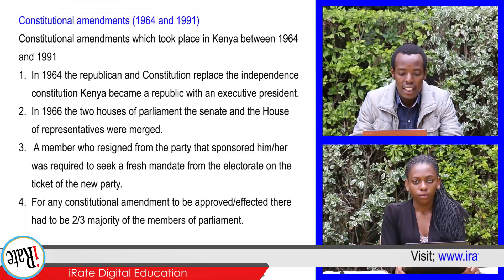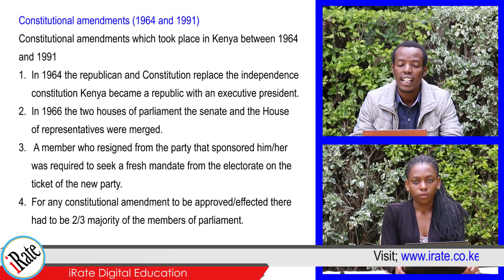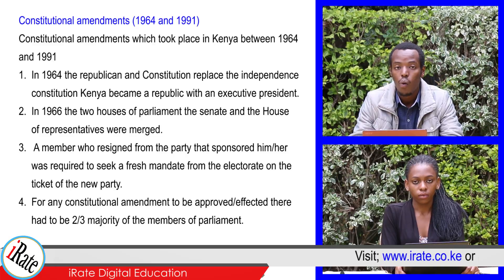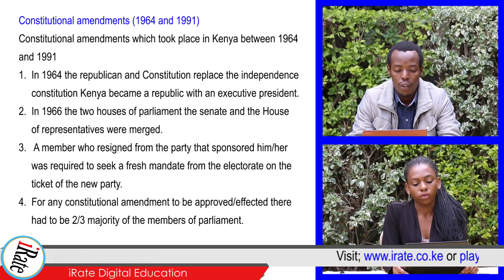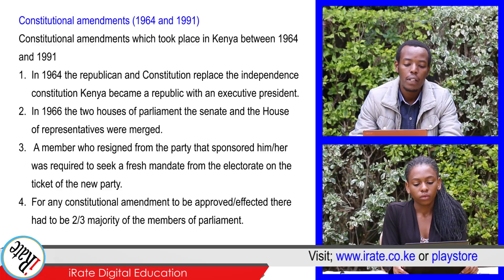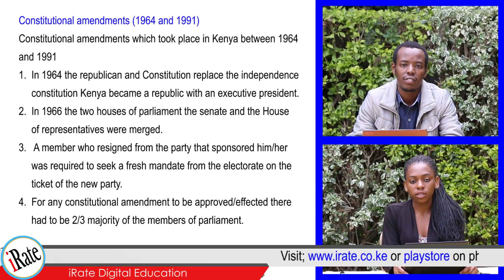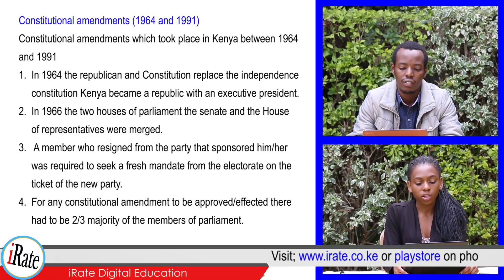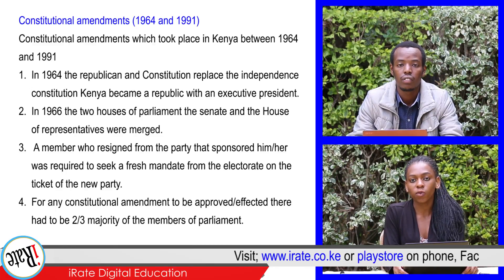Constitutional amendments which took place in Kenya between 1964 and 1991 are as follows. 1. In 1964, the Republic of Kenya became a republic with an executive president. 2. In 1966, the two houses of Parliament, the Senate and the House of Representatives, were merged.